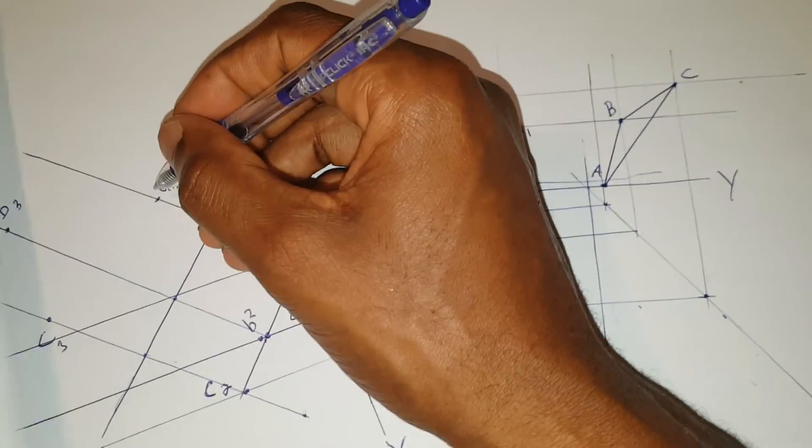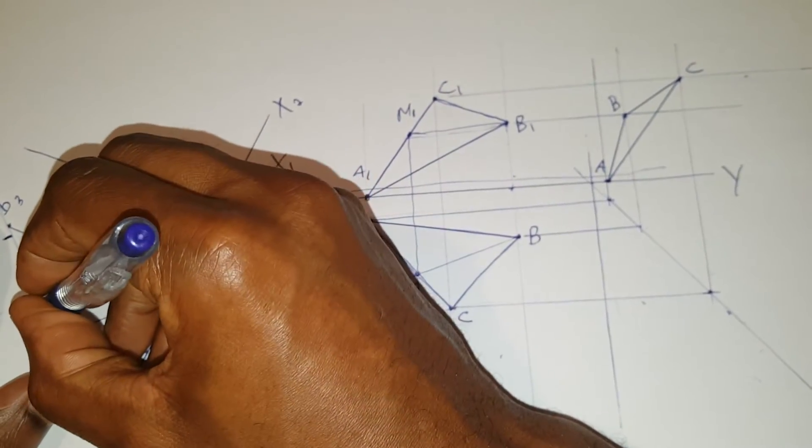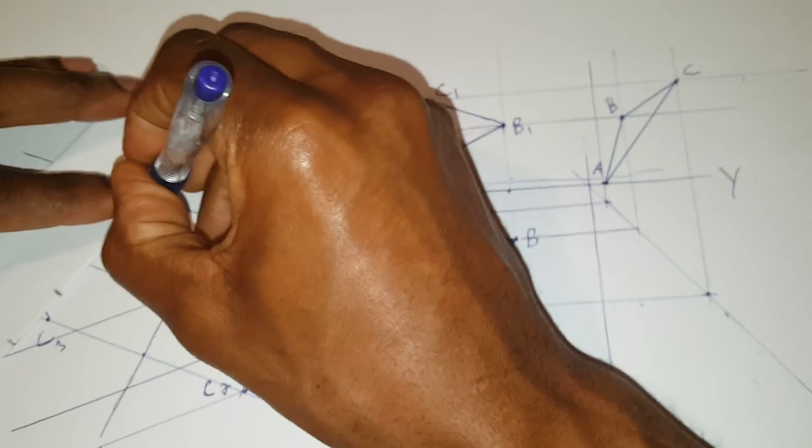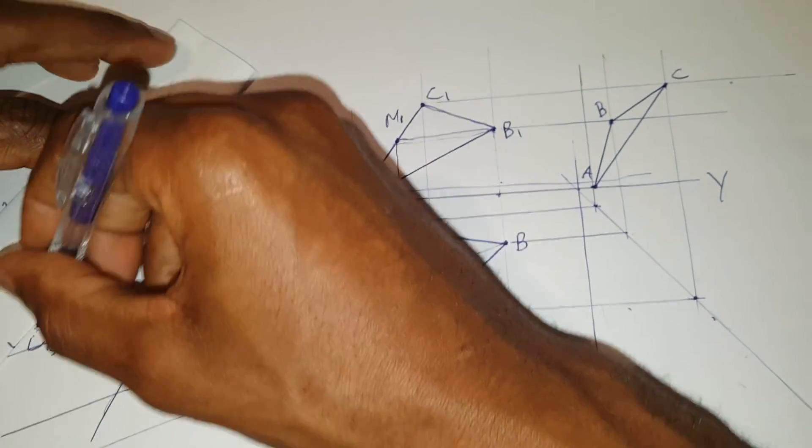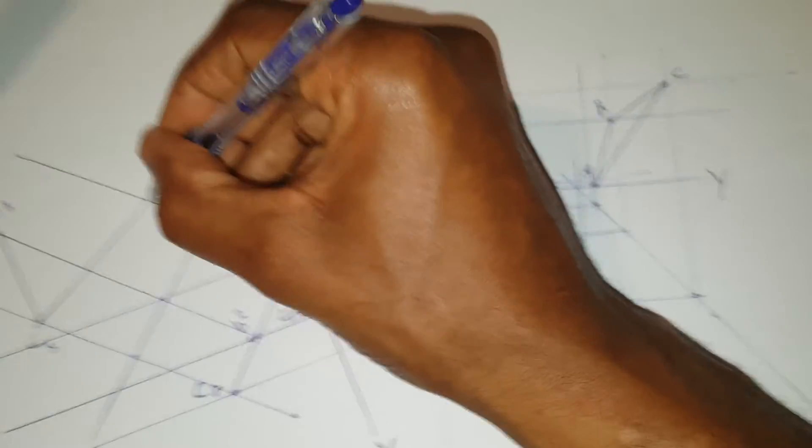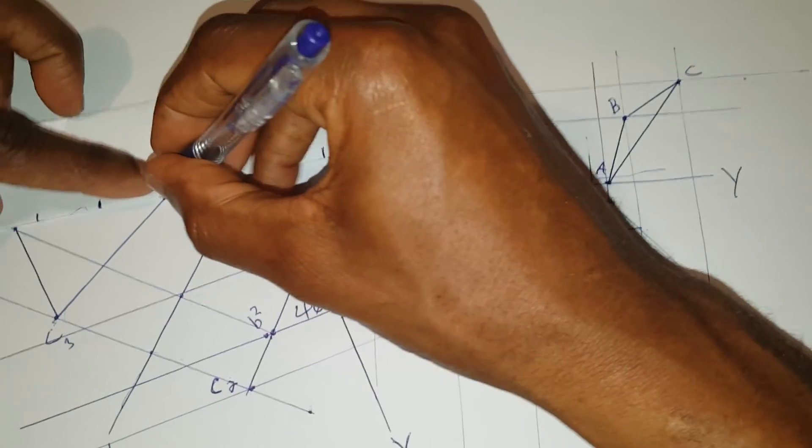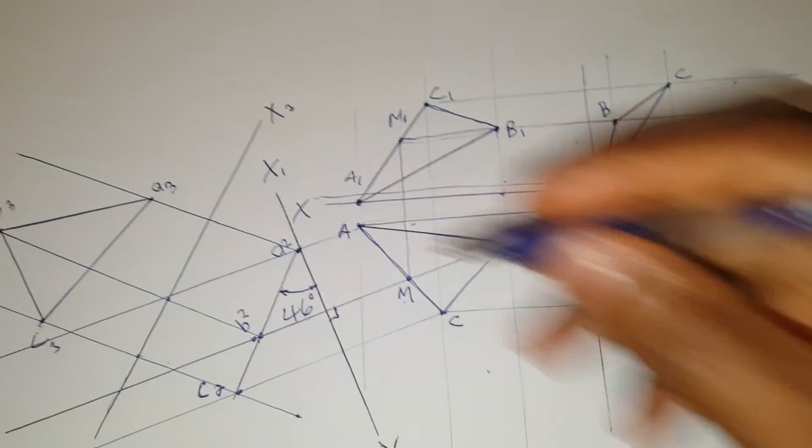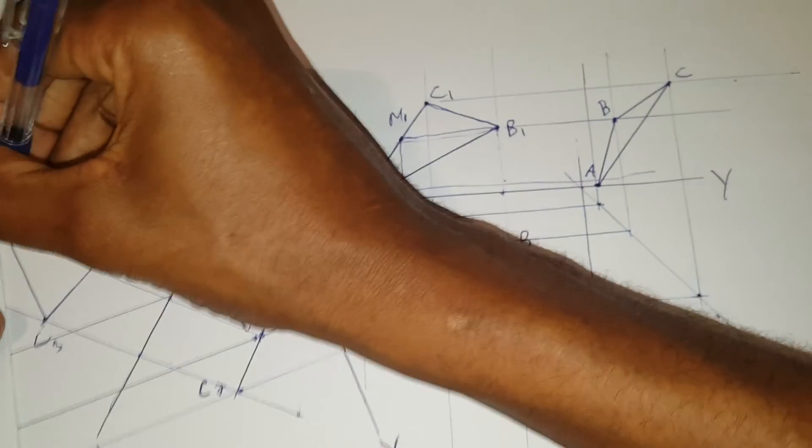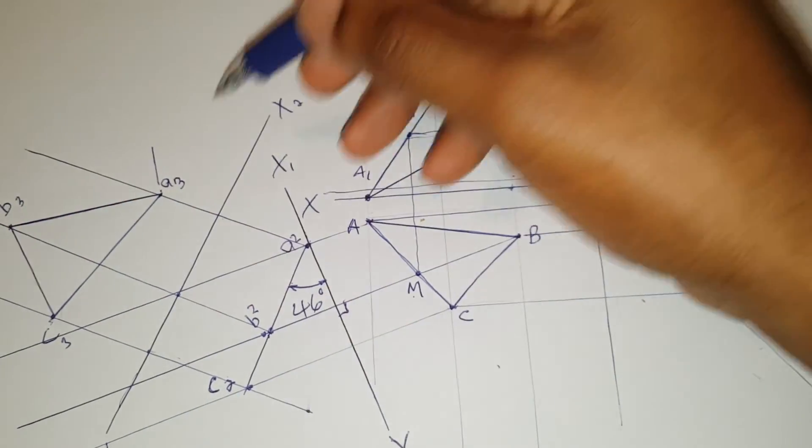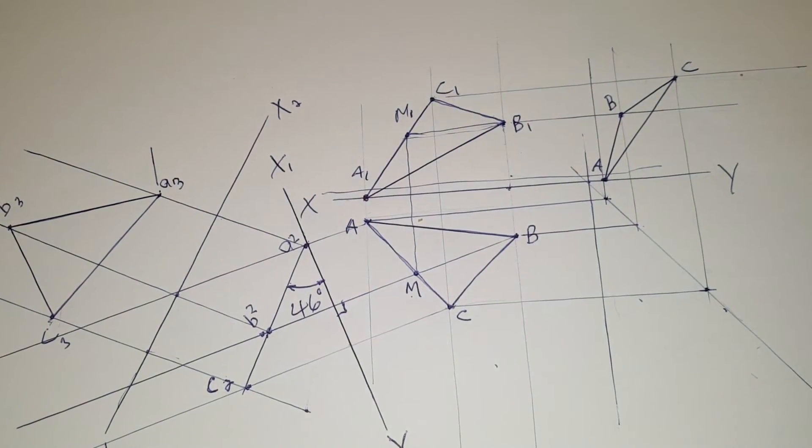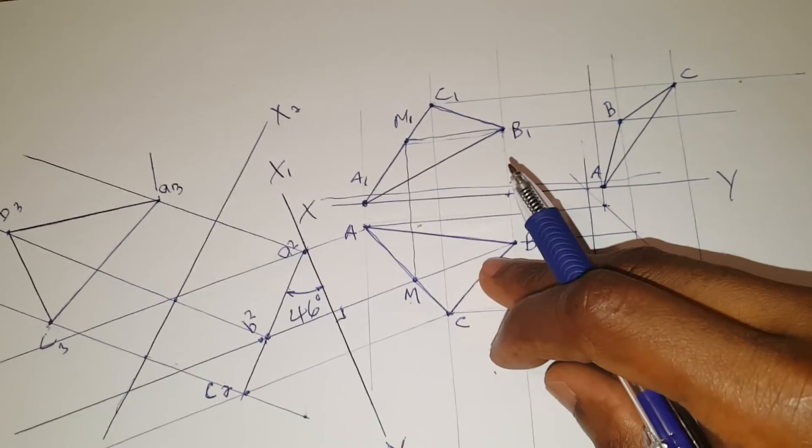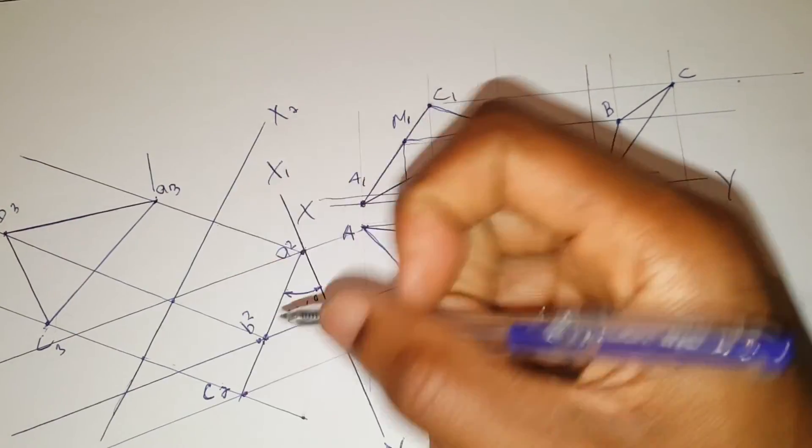I then join these points. B to C. And that is the true length for each side. So this is also the auxiliary plan, which gives the true length for each side.